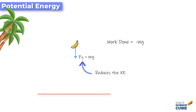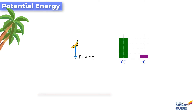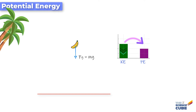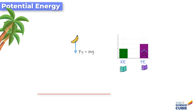Any force that results in a reduction of kinetic energy does negative work. If the kinetic energy of the banana is reducing, the law of conservation of energy tells us that some other form of energy must be increasing. Here, the potential energy of the banana increases, and we can say that this transfer of energy from one form to the other is enabled by the gravitational force. In other words, while the gravitational force reduces the kinetic energy account of the banana, it simultaneously increases the potential energy account of the banana.